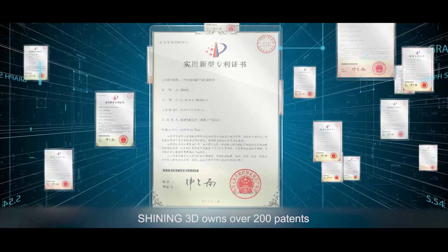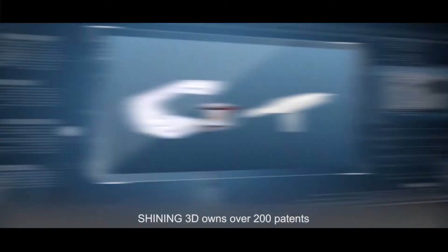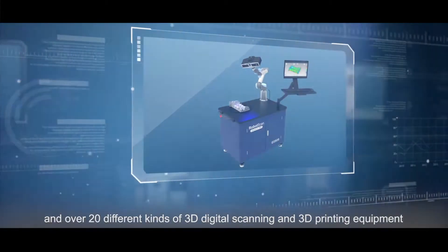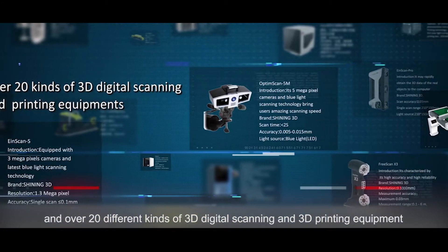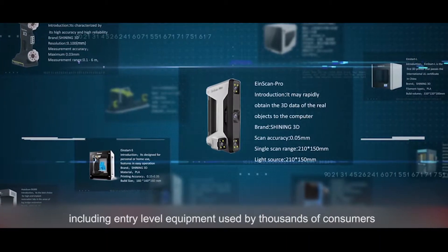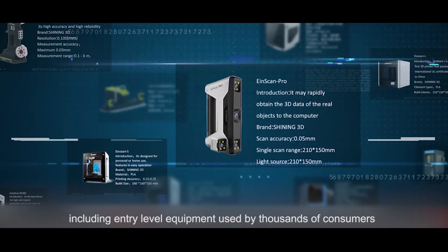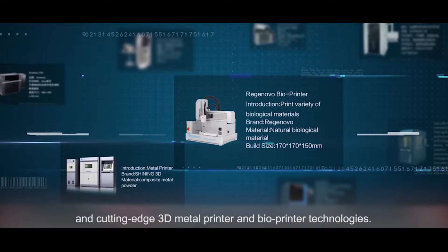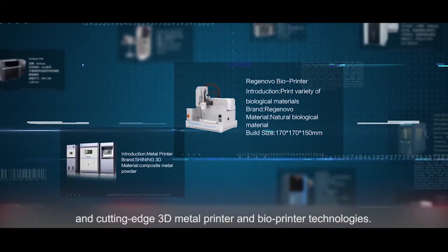Shiny 3D owns over 200 patents and over 20 kinds of 3D digital scanning and 3D printing equipment, including common equipment used by thousands of consumers, and cutting-edge 3D metal printers and bioprinters.